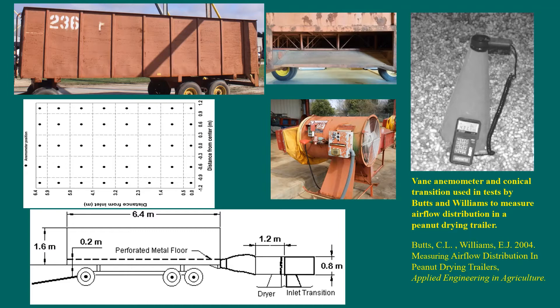Butts and Williams measured air flow through masses of peanuts loaded into 21-foot drying trailers. The 21-foot or 6.4-meter drying trailer is an open-topped metal box with a raised perforated floor forming an air plenum underneath the peanuts. Air is blown into the trailer plenum by the fan of a peanut dryer shown in the center. Peanut dryers can also heat the air.